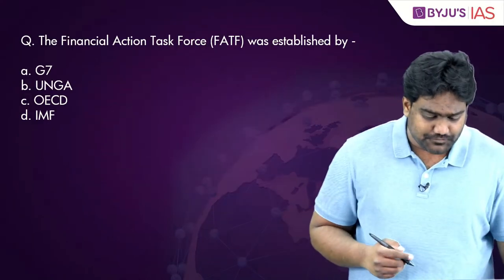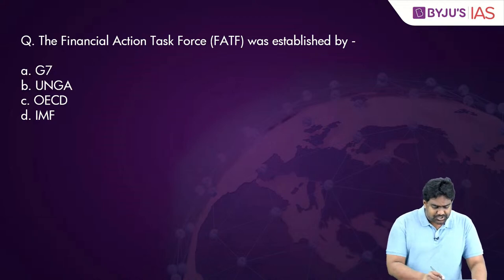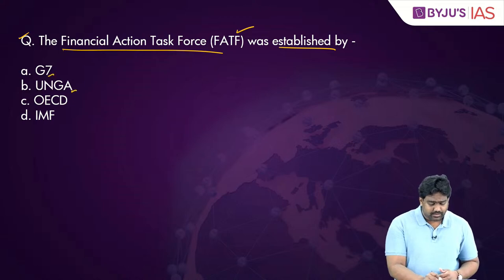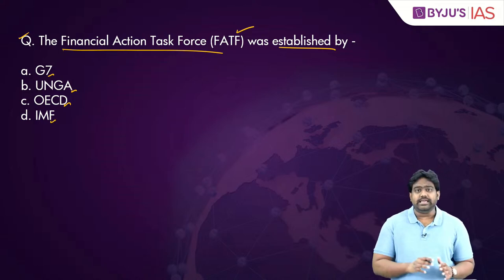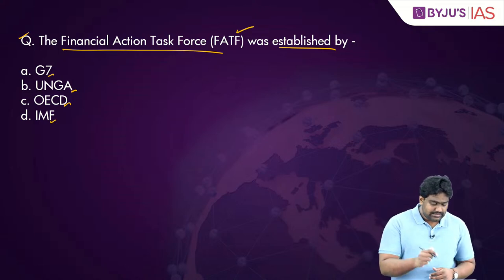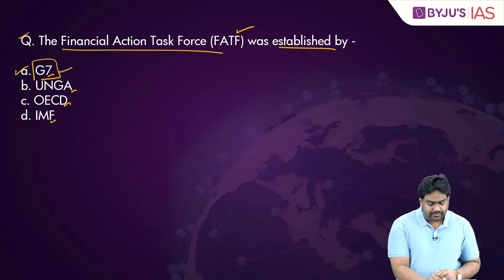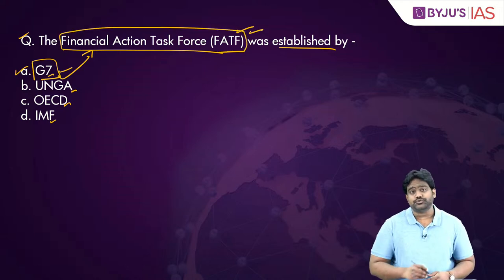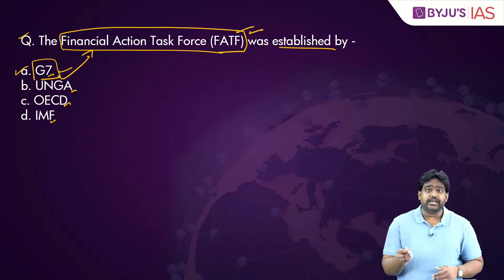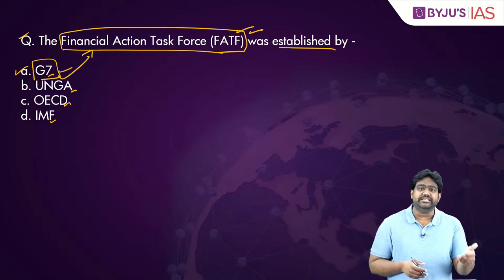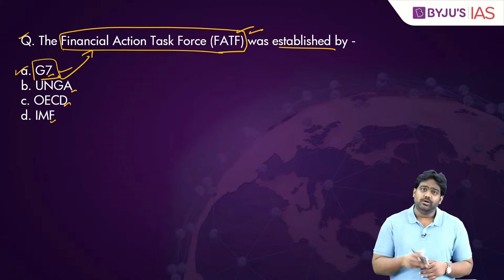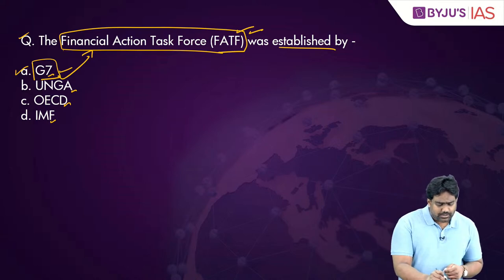Let's start with the first question for today, which is related to the Financial Action Task Force or FATF. The FATF was established by the G7, the UN General Assembly, the OECD, or the IMF? The correct answer is option A — G7. It was the G7 group which established the FATF. I've taken this as the first question because yesterday we ended the session with a discussion on the G7 grouping.